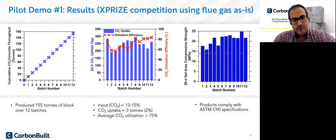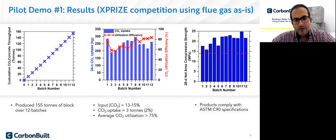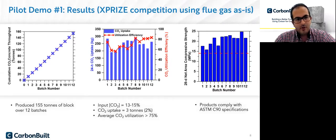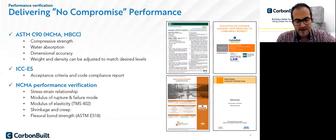Here is a high-level overview of our results from the first demonstration at ITC as part of the XPRIZE competition. We produced around 150 tons of concrete blocks over 12 batches. The CO2 uptake was around 3 tons overall — basically 2% by mass of solid, which translates to around one pound per block, which is quite a good number. The concrete blocks all fulfill the ASTM specifications; the strength data shown here demonstrates they all meet the strength criteria of 14 MPa for concrete blocks. We evaluated in detail the properties of concrete components with NCMA and Master Builder Solutions to verify the performance and detailed characterization of these concrete blocks hardened by the carbonation process.